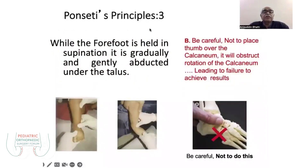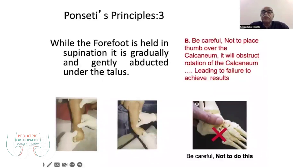The third principle is that the forefoot is held in supination and gradually and gently abducted more and more to achieve 50 degrees of abduction, stabilizing the talus. First, you correct the supination deformity, with simultaneous correction of abduction and varus of the heel. You should never place a thumb on the calcaneum but on the talar head, because fixing the talus-calcaneum will block the abduction and free movements of the forefoot along with movements of the midtarsal and hindfoot.